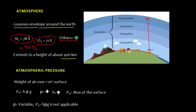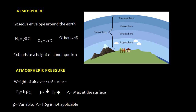Now let's talk about atmospheric pressure. Basically, atmospheric pressure is the pressure exerted by the atmosphere. Atmospheric pressure is the weight of air — specifically, the weight of air over 1 meter square surface of the earth. We know the definition: P is equal to F over A.